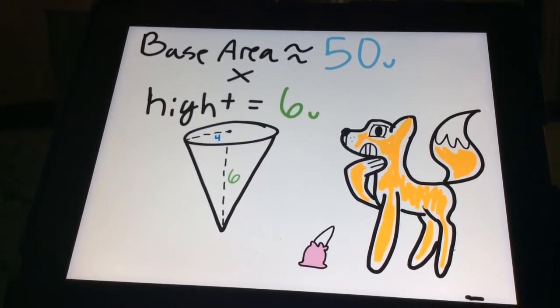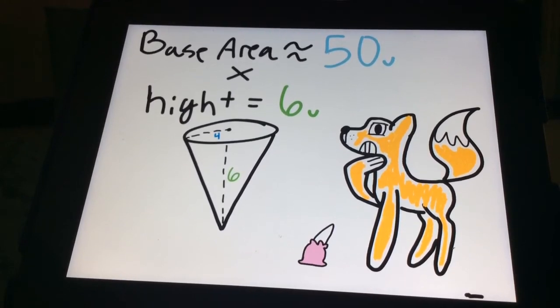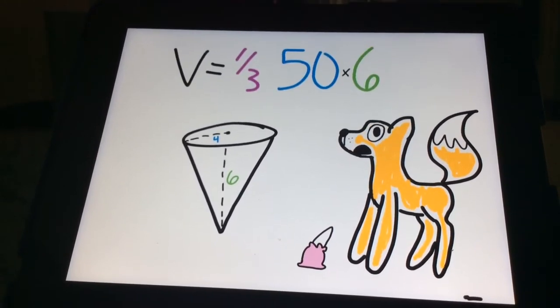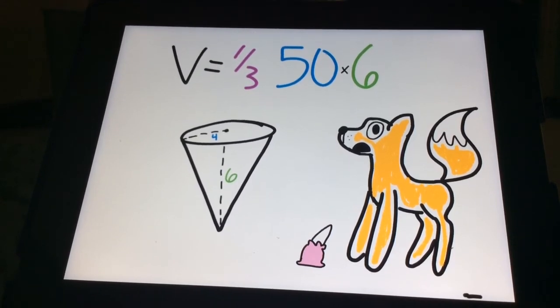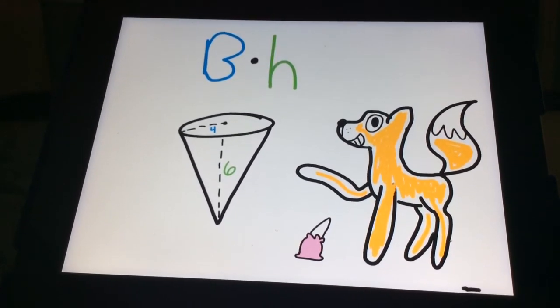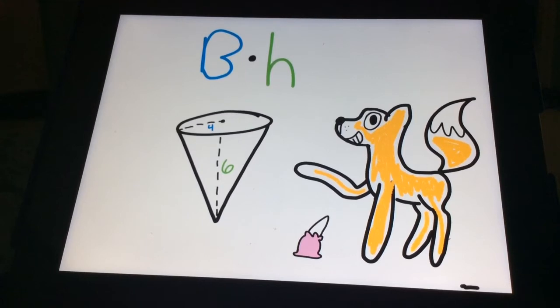Once you have that, you need to multiply it times the height. So if the base area is similar to 50 and the height is six, we're still quite not done yet. We need to remember that one-third. Think of it as the b and the h, or just the first two parts of the equation.